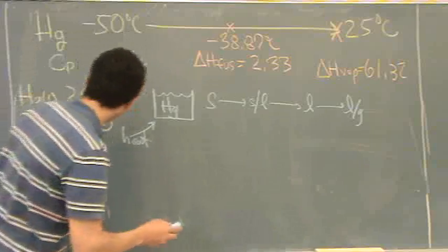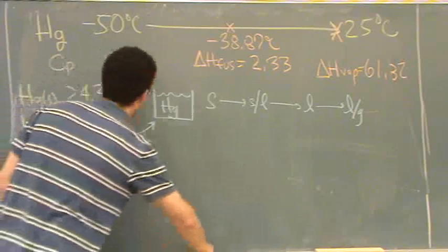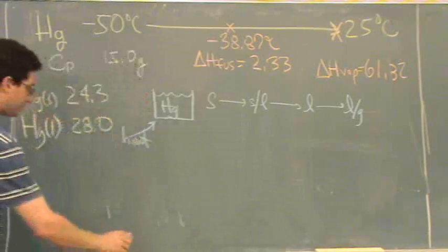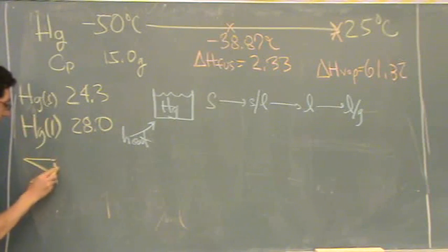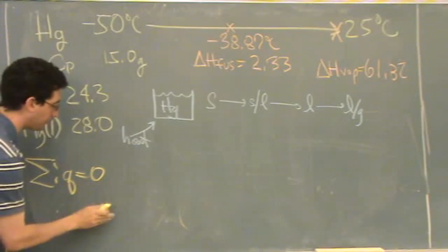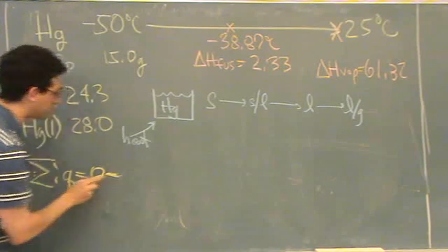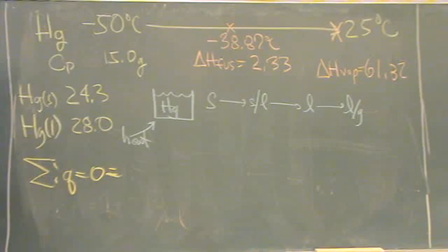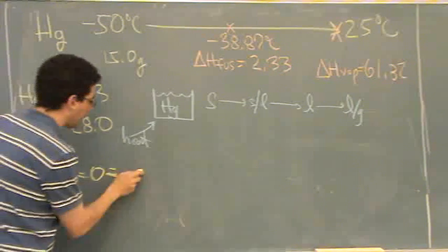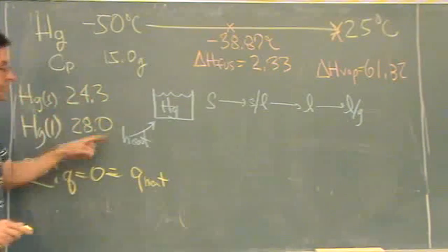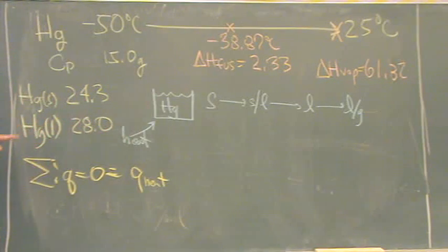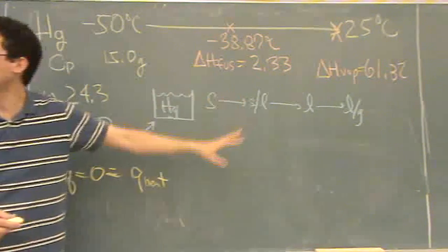You can write it like this. Sum of the q's equals zero, equals the q of the heat. Basically, how much do I have to heat it up? And then, all the other q's to make this happen.